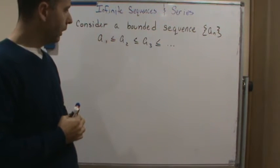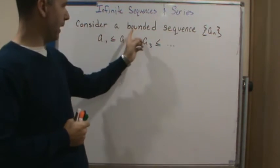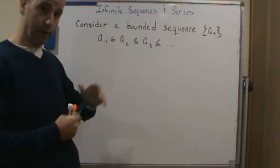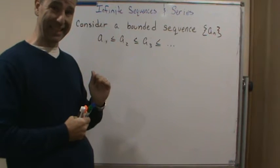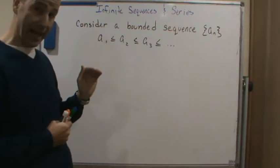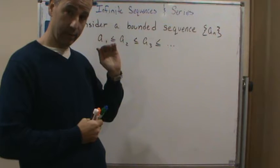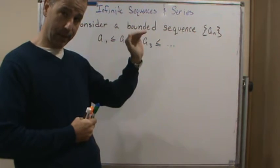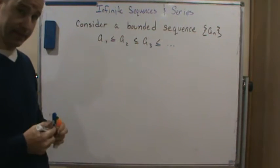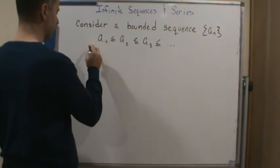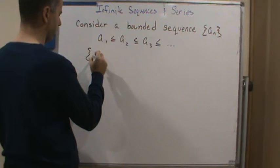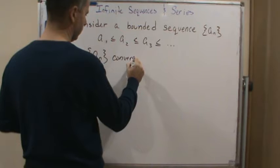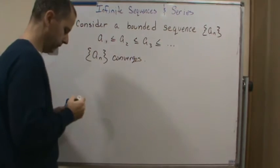Now, the fact that this is a bounded sequence means that it's bounded from above, which means that it can't go past a certain value. So even though this is increasing, the fact that it's bounded above tells us that the sequence a sub n converges.